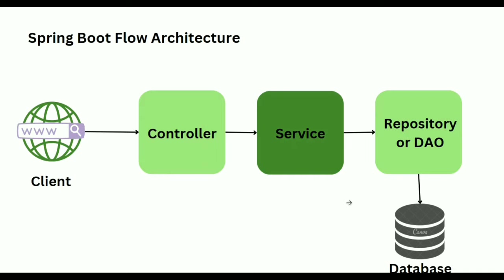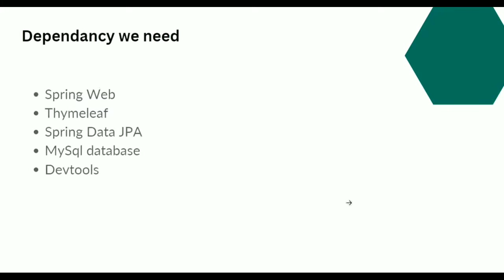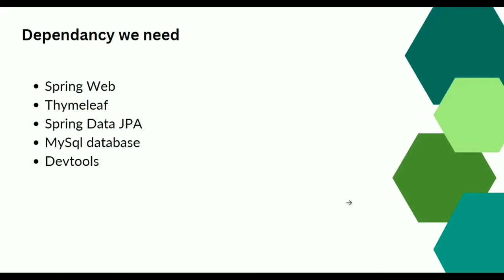Here we have three layers: the controller layer, where the first request is accepted from the client (which may be any browser or user); the service layer, where we write our business logic; and the repository or DAO layer, where we perform all database-related operations like fetching data. Now here are the dependencies we need. First is Spring Web, used to create a web application. Second is Thymeleaf — a Java-based template engine capable of processing XML, HTML, and JavaScript. We use this to create our view pages.